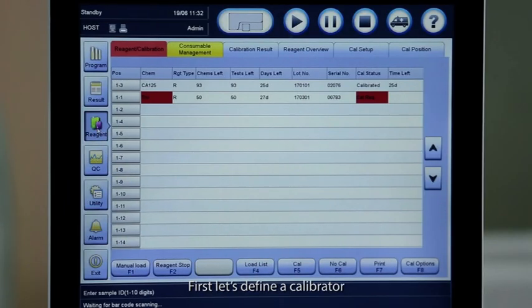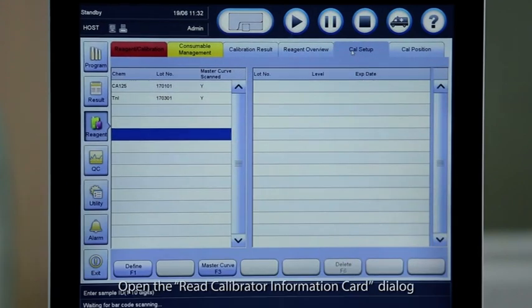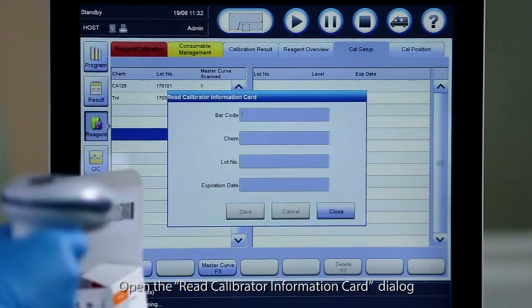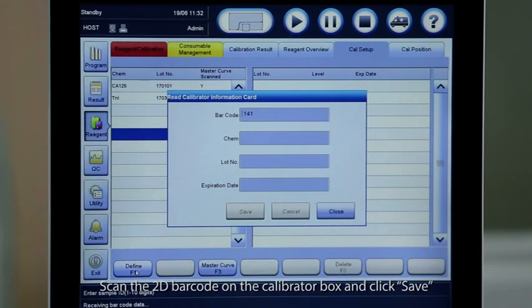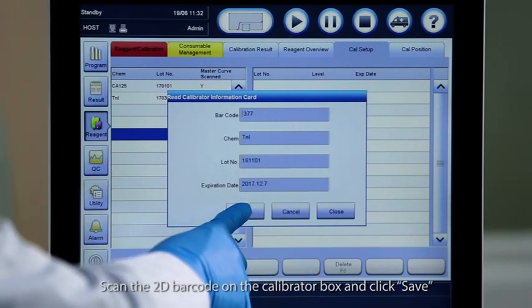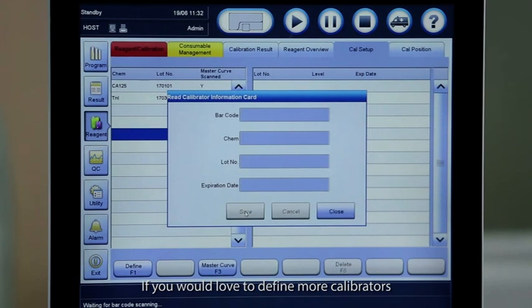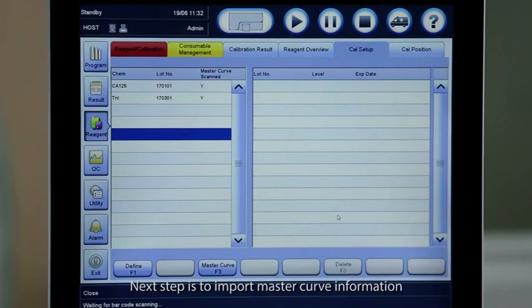First, let's define a calibrator. Open the read calibrator information card dialog. Scan the 2D barcode on the calibrator box and click save. If you would like to define more calibrators, scan more barcodes on the calibrator box.